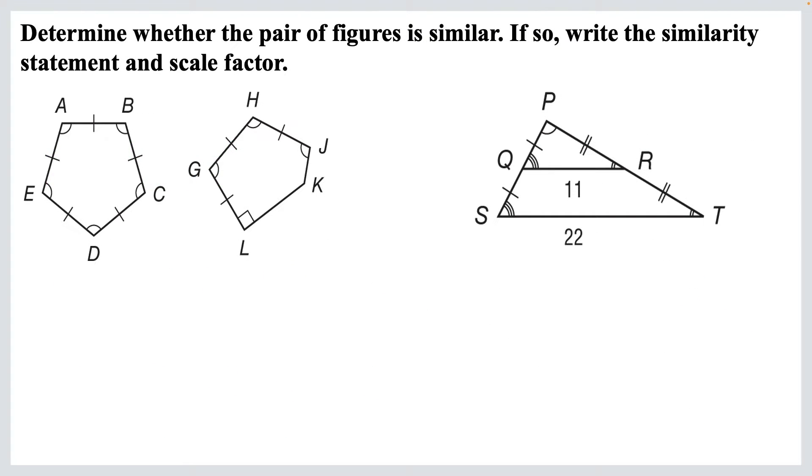Here's another one. Determine whether the pair of figures is similar. If so, we're going to write a similarity statement and scale factor. So the two figures on the left, do all of their corresponding angles equal? Well, no. Angle L there is the only right angle hanging out there. It corresponds with E, they're not congruent. So we just move on to the next problem.